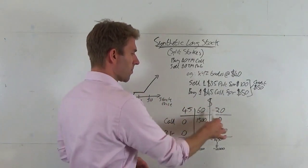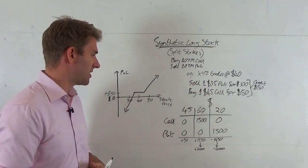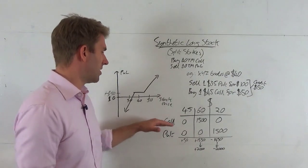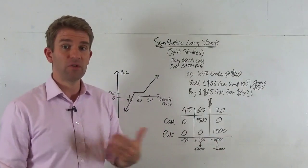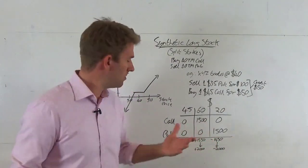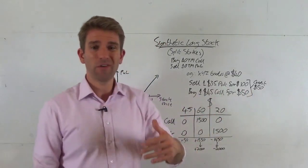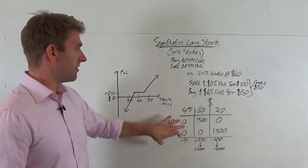Let's look at what happens if we were 45 bucks at expiry. Our call option is worthless right, because we've got a 45 call, the right to buy something at 45 that's at 45 has no value. What about a 35 put, the right to sell something at 35 that's at 45 has no value too.